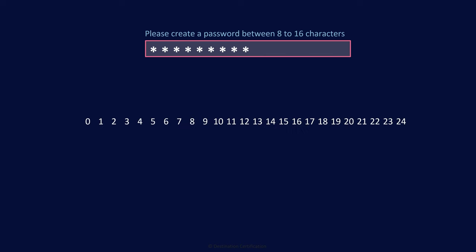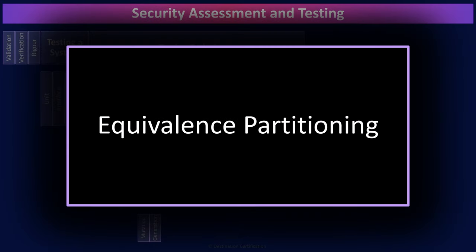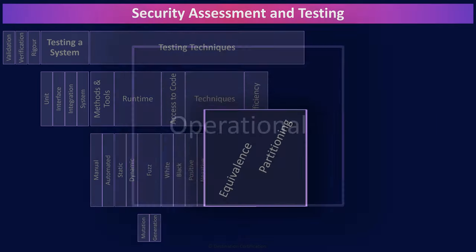If we are asking for a password length of say 8 to 16 characters, then we have a boundary between 7 and 8 characters. 7 characters should be rejected and 8 characters should be accepted. And then another boundary between 16 and 17 characters. So in boundary value analysis, we would focus our testing on either side of this boundary. In equivalence partitioning, we identify three partitions and then do some testing within each partition.